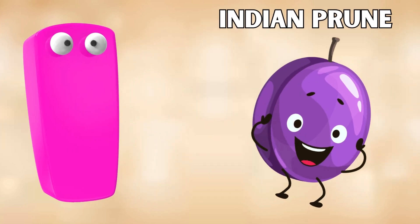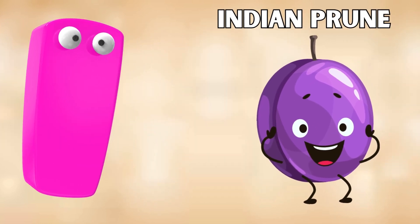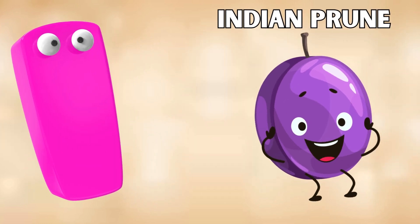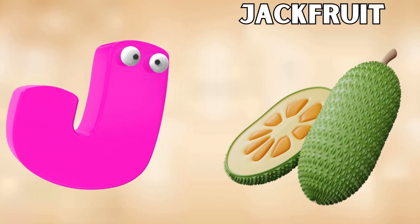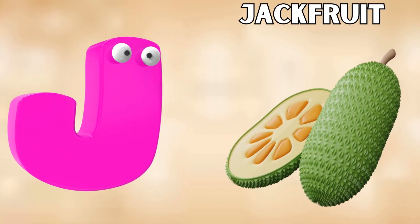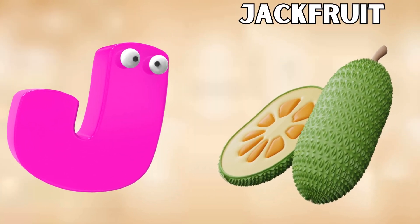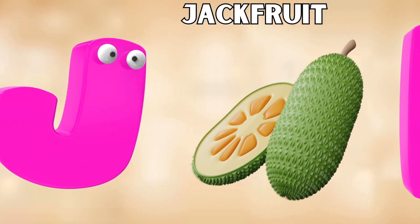I is for Indian prune, e-e-e, Indian prune. J is for jackfruit, j-j-jackfruit.